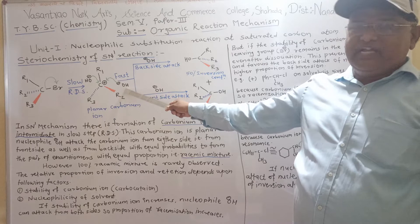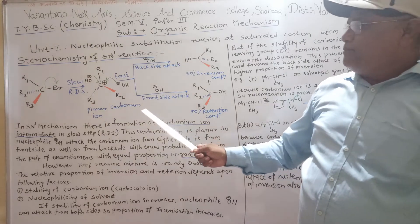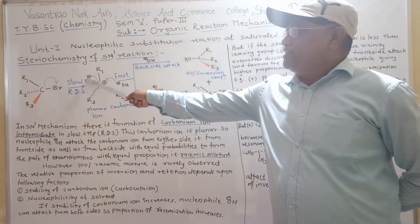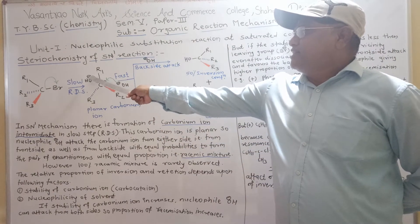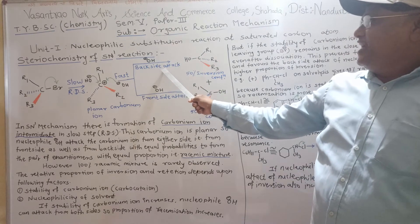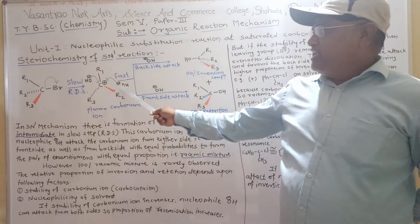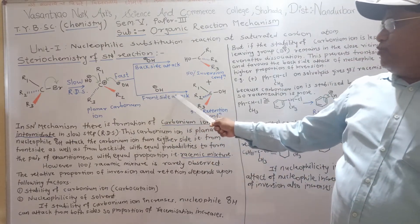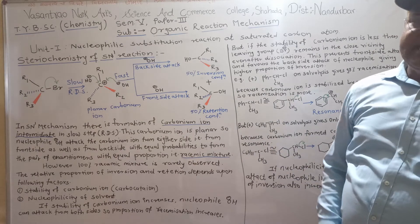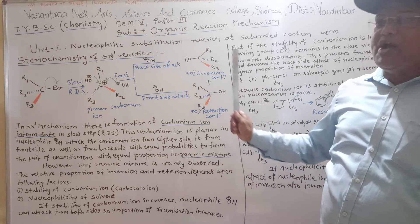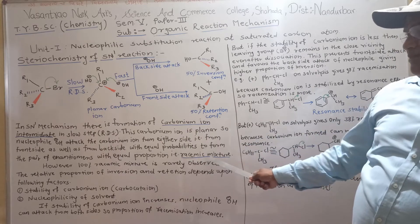The nucleophile OH negative attacks on the carbonium ion from either side — that is, from the front side as well as from the back side. When the nucleophile OH attacks from the back side, we get 50% inversion of configuration. But when the nucleophile attacks from the front side, we get 50% retention of configuration.